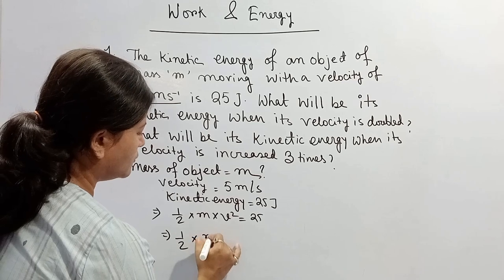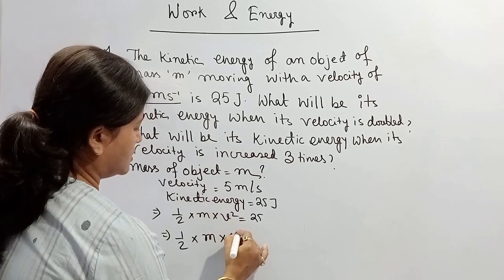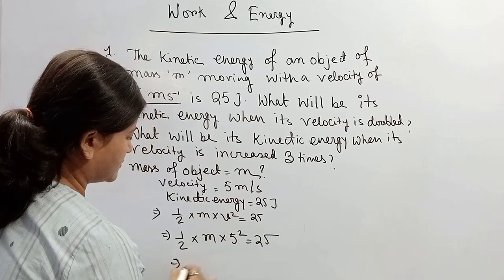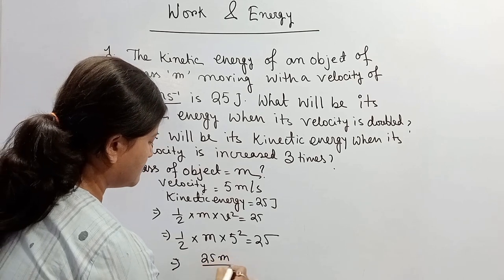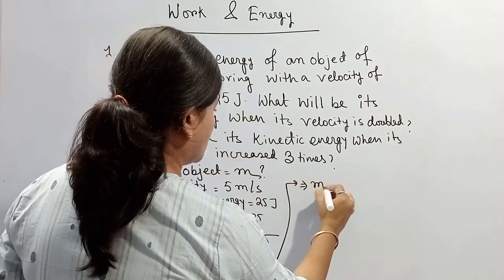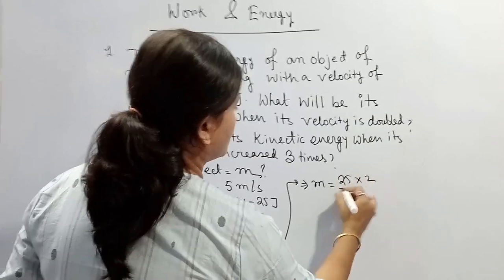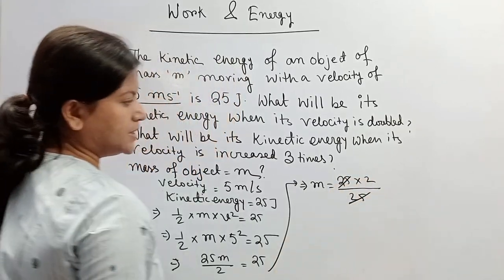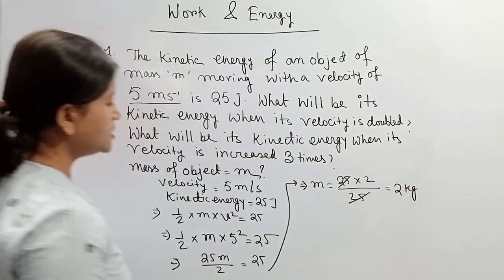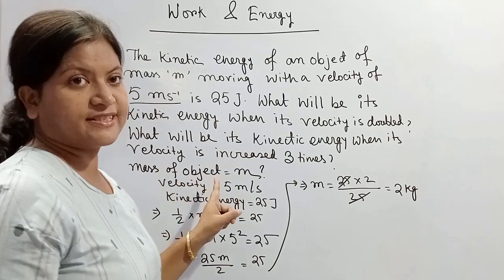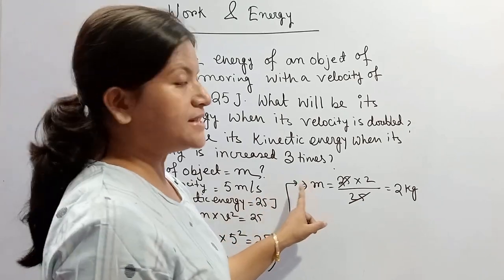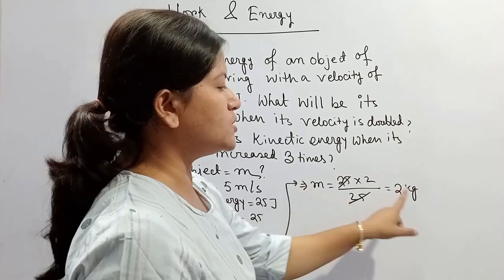We know the value of velocity is 5, so V squared gives us 5 squared. That means 25M divided by 2 equals 25. So M equals 25 times 2 divided by 25 — the 25s cancel. So M equals 2 kg. Because velocity is in SI units and kinetic energy is also in SI units, the SI unit of mass is kg. That's why M equals 2 kg.